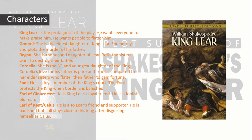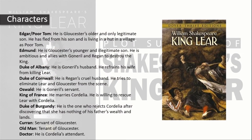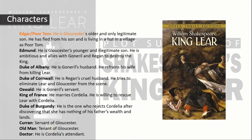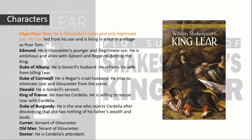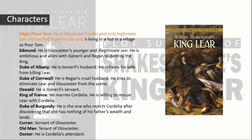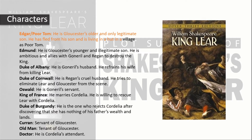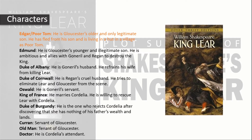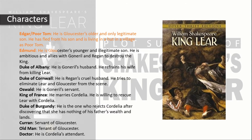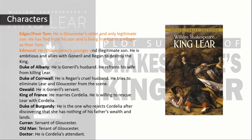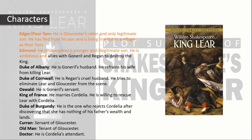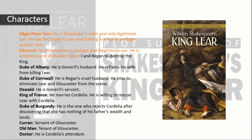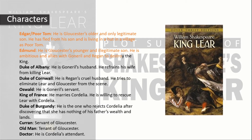Edgar, also known as Poor Tom, is Gloucester's older and only legitimate son. He has fled and is living in a hut in a village as Poor Tom. Edmund is Gloucester's younger and illegitimate son. He is ambitious and allies with Goneril and Regan to destroy the king.